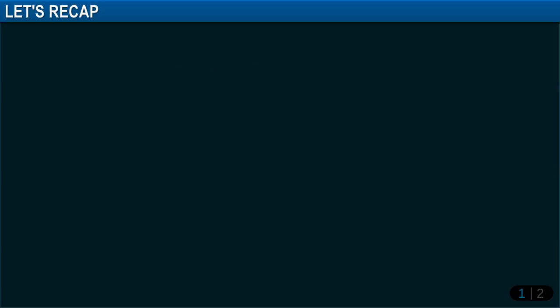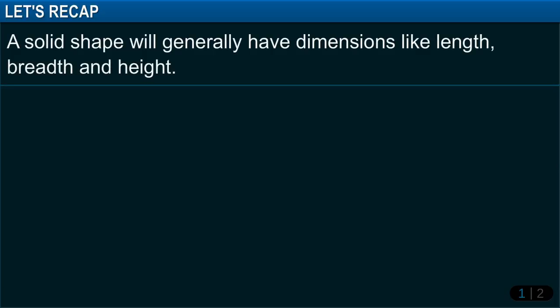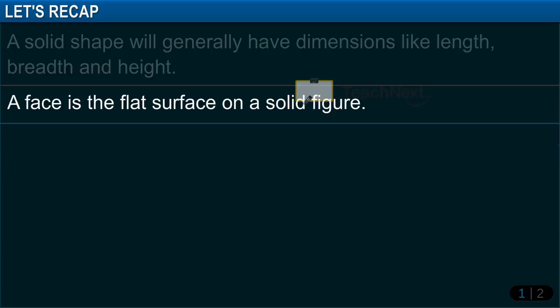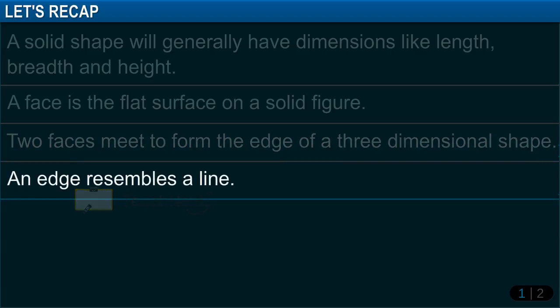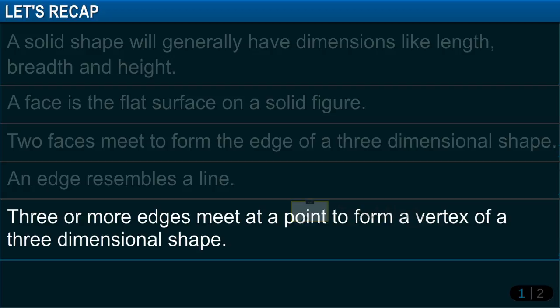In this module, you learnt that a solid shape will generally have dimensions like length, breadth and height. A face is the flat surface on a solid figure. Two faces meet to form the edge of a three-dimensional shape. An edge resembles a line. Three or more edges meet at a point to form a vertex of a three-dimensional shape.